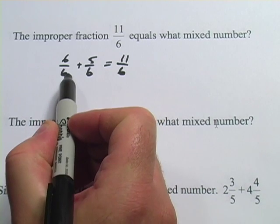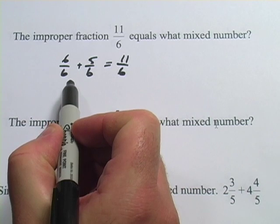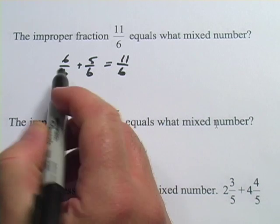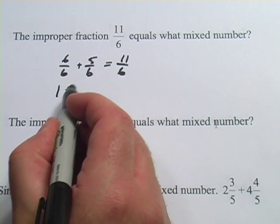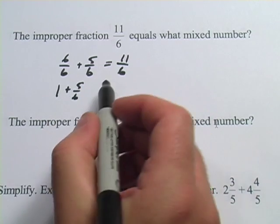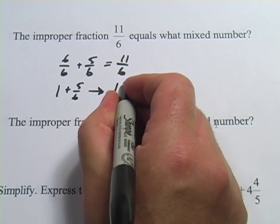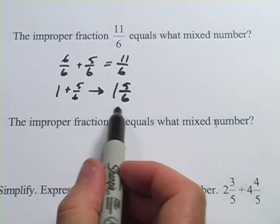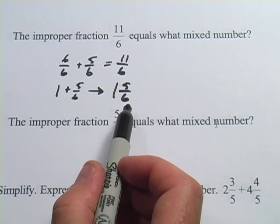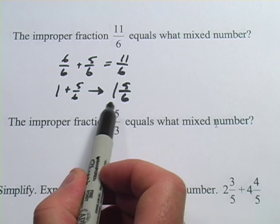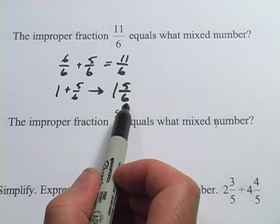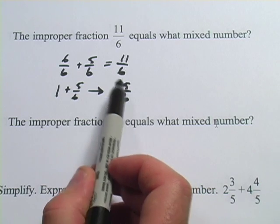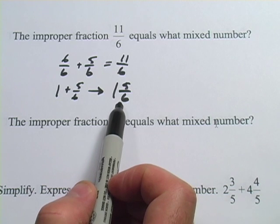But anytime you have the numerator and the denominator the same, a number over itself, that equals 1. So this is really like 1 plus 5 sixths. And the way we'd write that would be 1 and 5 sixths. That would be what's called a mixed number. And they call that mixed because there's an integer part and a fraction part. So that's how to convert this improper fraction into a mixed number.